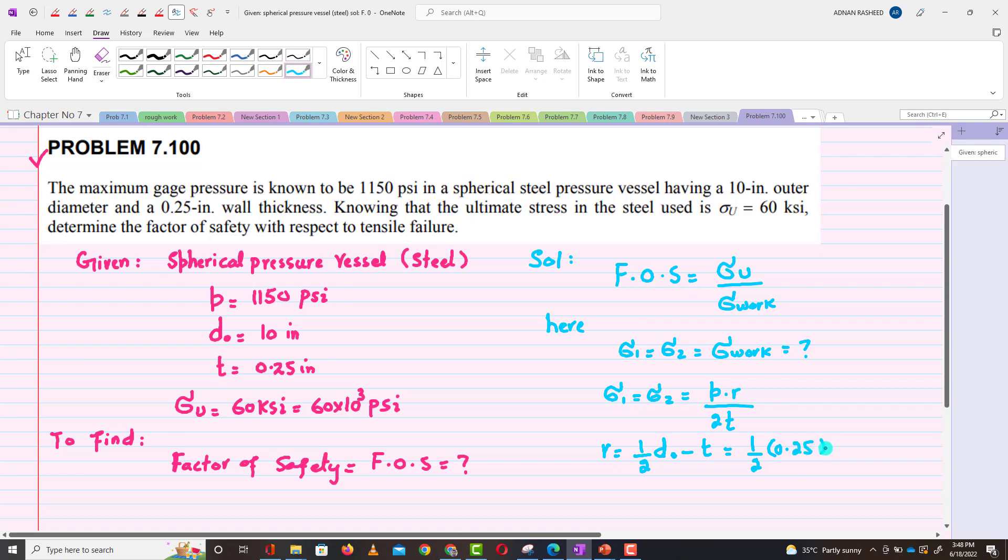The outer diameter is 10 inches, so 10 ÷ 2 minus thickness which is 0.25 inches. So from here you will get r = 4.75 inches.